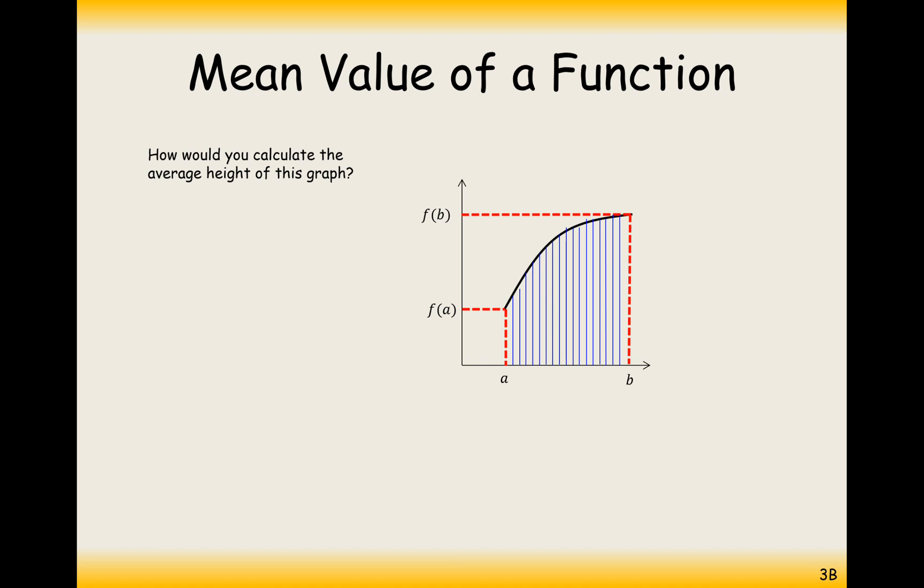Now if we do that as the limit of the amount of lines that we've got here approaches infinity, then this is effectively what we've got. We've got the average is equal to add up all of the heights of the lines. And the heights of the lines is represented by the function with the certain input value substituted in.